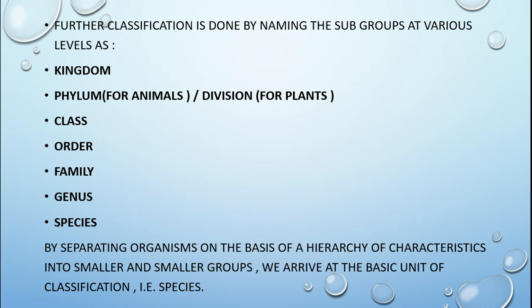After that, subgroups are named. The levels are: Kingdom, Phylum (for animals) or Division (for plants), then Class, Order, Family, Genus, and Species. By separating organisms on the basis of hierarchy of characteristics into smaller and smaller groups, we arrive at the basic unit of classification, that is the Species.